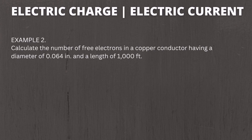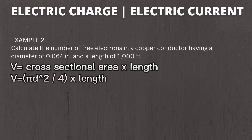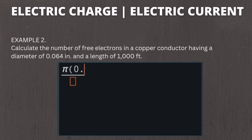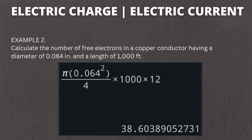Example number two: calculate the number of free electrons in a copper conductor having a diameter of 0.064 inch and a length of 1000 feet. First, solve for the volume in cubic inches. Volume equals area multiplied by length, where area equals pi d squared over 4. Substituting: pi times 0.064 squared, divided by 4, multiplied by 1000 feet — converting to inches by multiplying by 12 — gives 38.6 cubic inches.